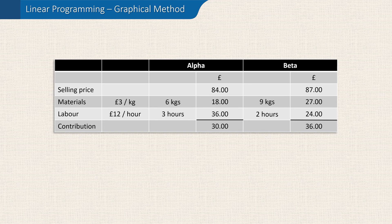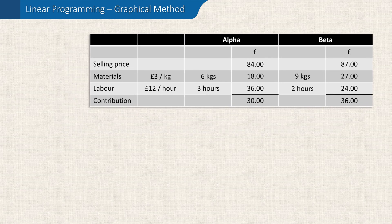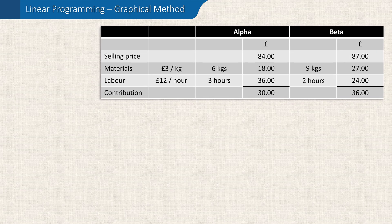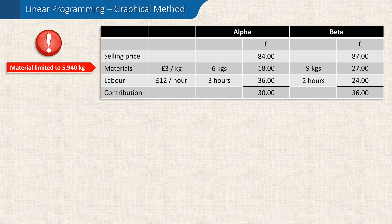When planning for the next period, the business has learnt that the total materials that can be sourced will be limited to 5,940 kilograms, and that labour will also be limited to 1,800 hours.